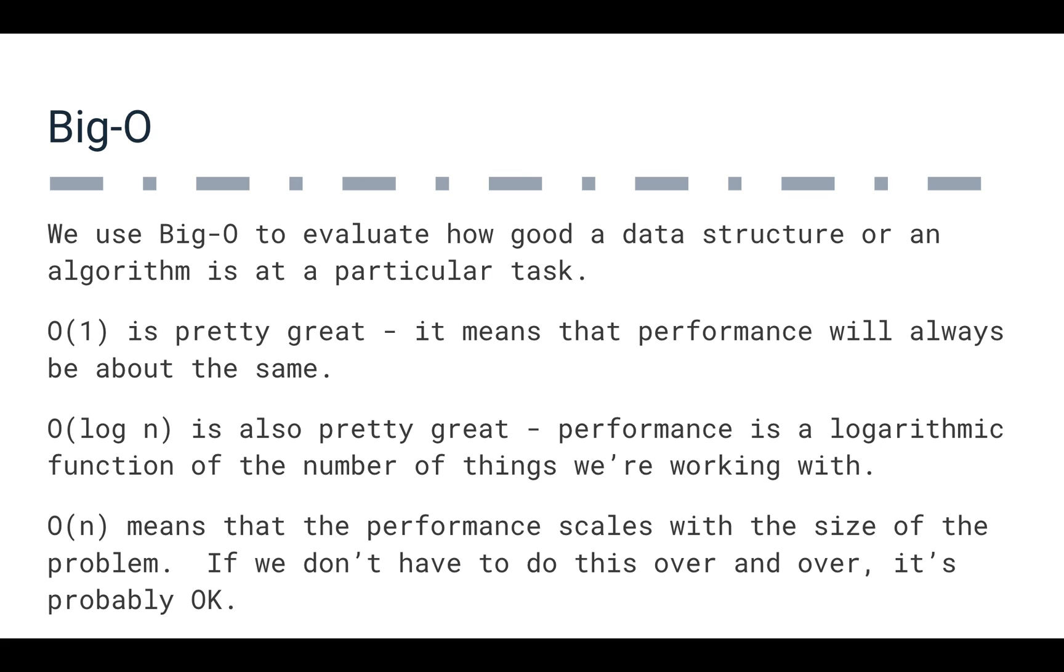And Big O of n means that the performance scales with the size of the problem. So if we don't have to do a Big O of n task over and over again, most likely it's okay. If you think about it, your processor is probably about two gigahertz these days, maybe one and a half gigahertz, but somewhere in the space of being able to run over a billion cycles a second. So if we have to process a million things, and we have a Big O of n algorithm, that probably can still perform reasonably well, if we don't have to do it over and over again.